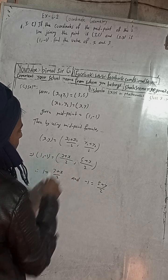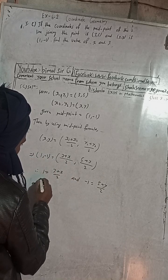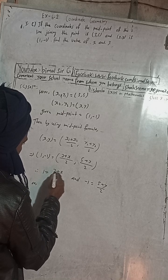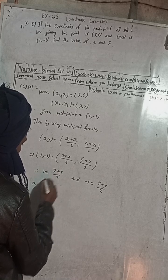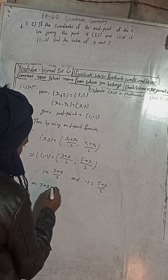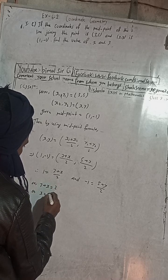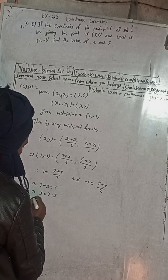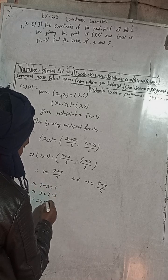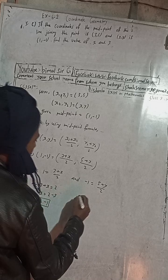Now solving for x: 3 plus x is equal to 2 into 1, which gives 3 plus x equals 2, therefore x is equal to 2 minus 3, therefore x is equal to minus 1.